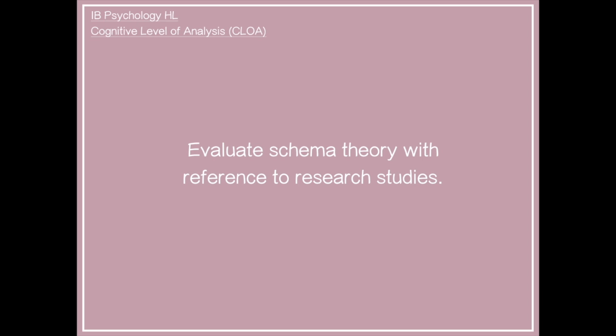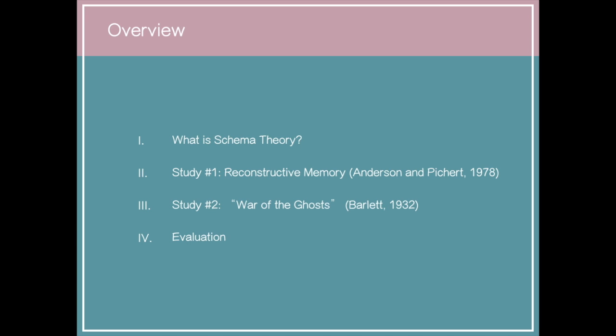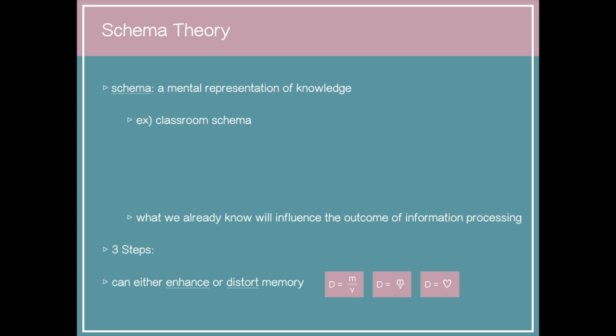Today's learning outcome for the cognitive level of analysis is to evaluate schema theory with reference to research studies. Here's a brief overview: we're going to talk about what schema theory is, then two studies that support this theory, and then evaluate the theory.